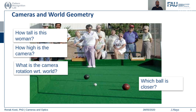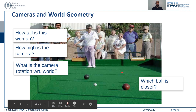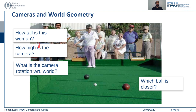Before we move on to the main camera parameter estimation techniques, we want to ask the basic questions that are possible. If you have an image of the real world, you want to know things like: how tall is this woman in the image, how high is your camera, at what angle is the camera with respect to the world, and which ball is closer? If we can model the camera parameters, we will be able to answer all these questions easily.